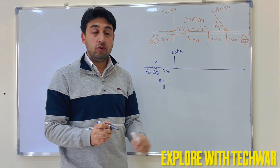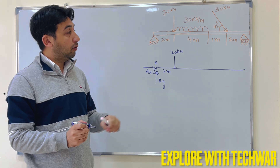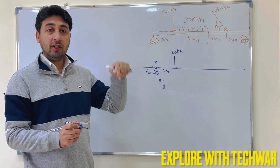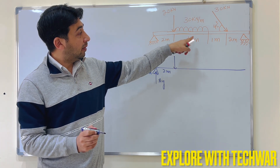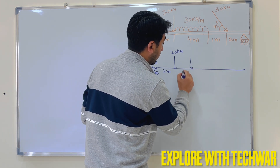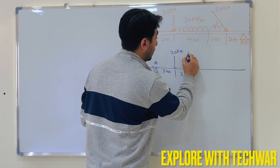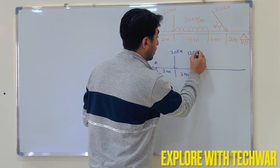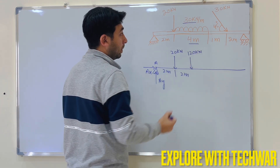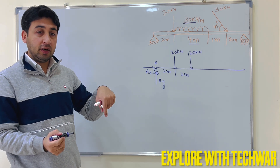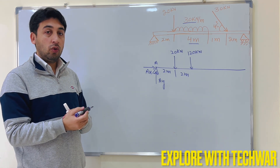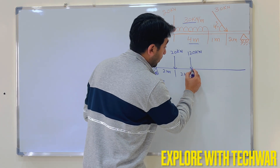We have a 30 kilo newton per meter UDL acting over 4 meters, so 30 times 4 equals 120 kilo newtons. That 120 kN acts at the middle of the 4 meter span, which is 2 meters in. So 120 kilo newtons acts at 2 meters from the start of the UDL.